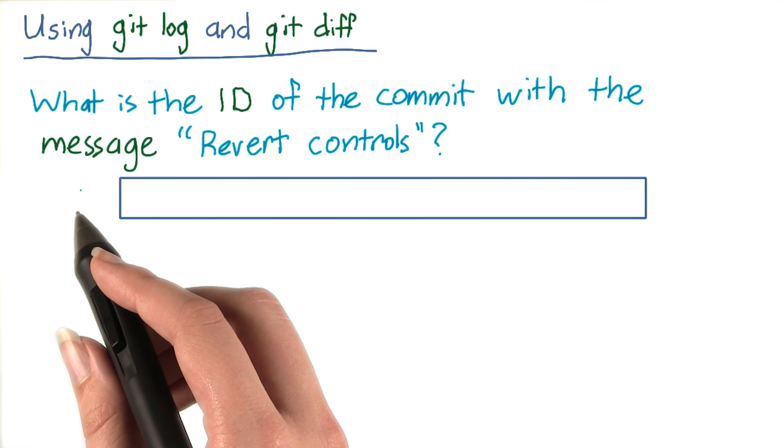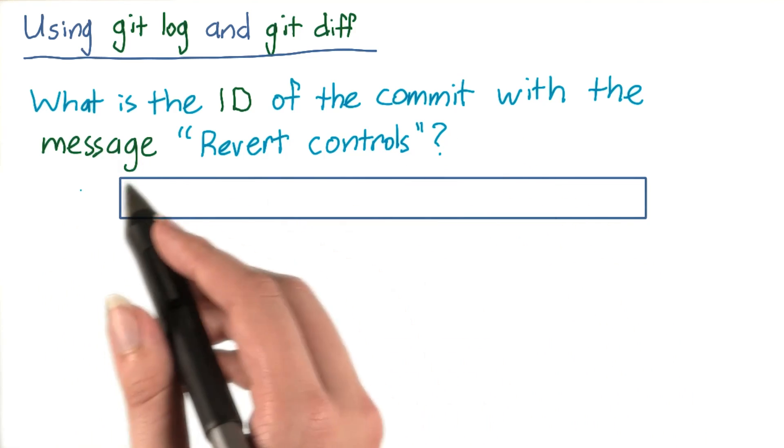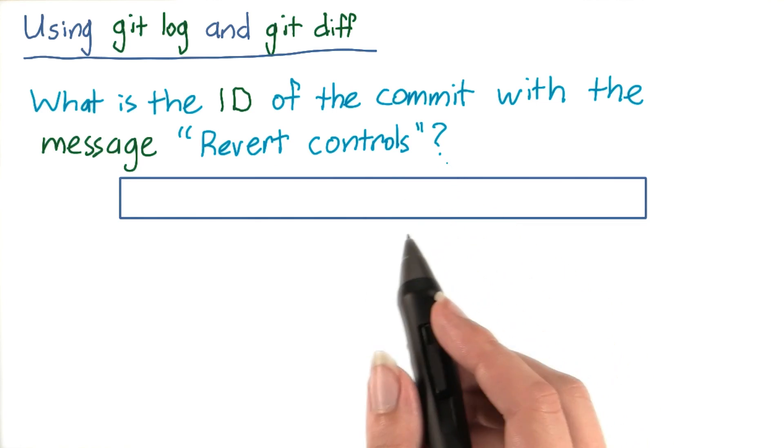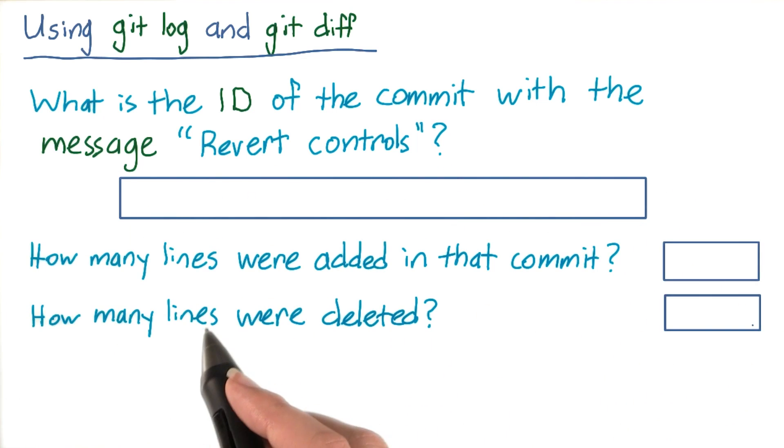Use git log to find the ID of the commit that reverted the controls. This commit has the message 'revert controls'. Enter the ID of that commit in this box. Then use git diff to find how many lines were added and deleted by that commit, and enter those numbers here.